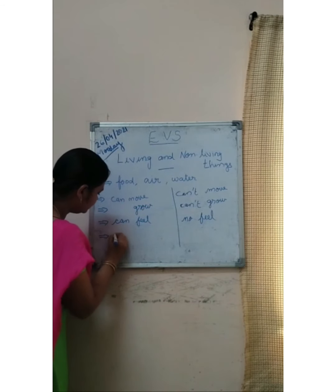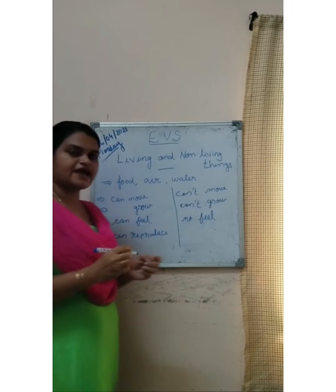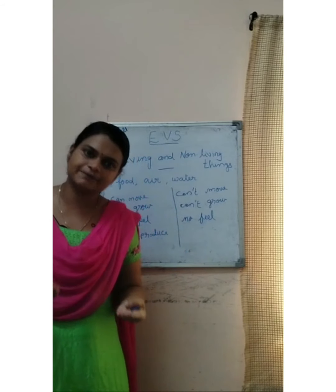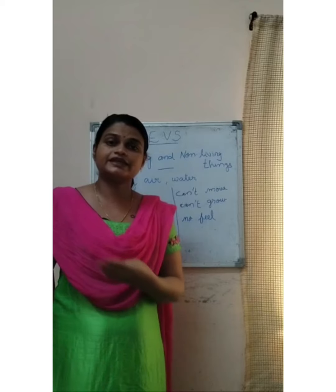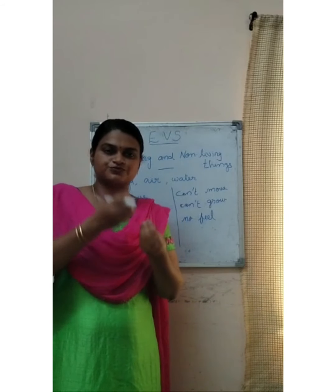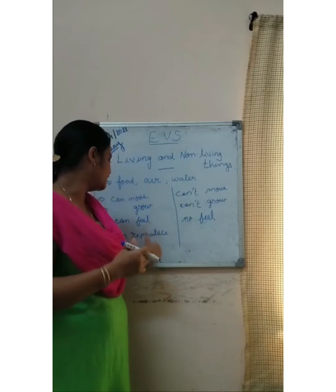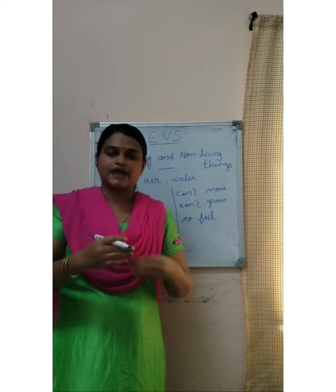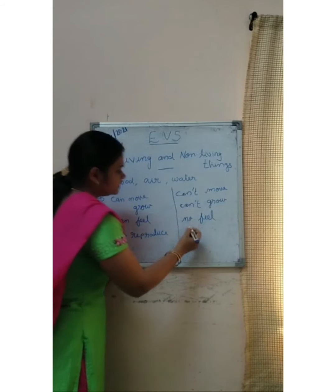Living things can reproduce. What do you mean by reproduction? It is the process of giving birth to their babies. Our mother gives birth to us. A hen gives birth to chicks. Fishes give birth to their babies. Plants produce fruits and seeds, and small saplings grow. All living things give birth to young ones. But a toy, after 2 or 3 years, can it produce baby toys? No, never. Non-living things cannot reproduce.